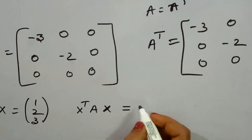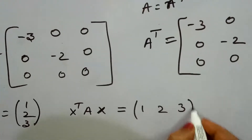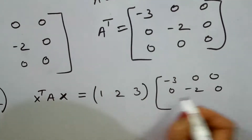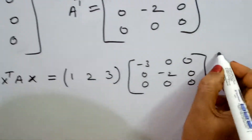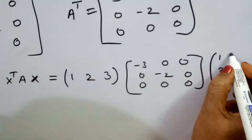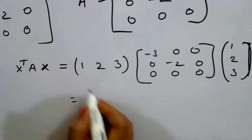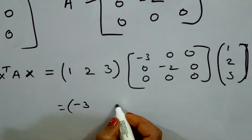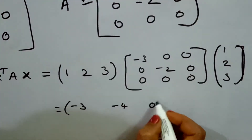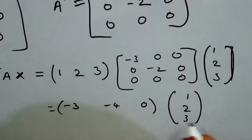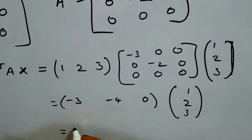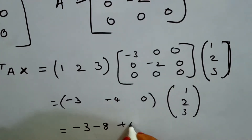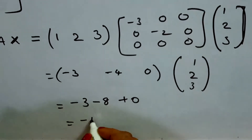x transpose Ax equals AX. The given matrix A is: minus 3, 0, 0 / 0, minus 2, 0 / 0, 0, 0. And x is [1, 2, 3]. The product AX gives: first entry minus 3, second entry minus 8 (from minus 2 times 2 plus 0 plus 0), plus 0. This value is minus 11, which is less than 0.